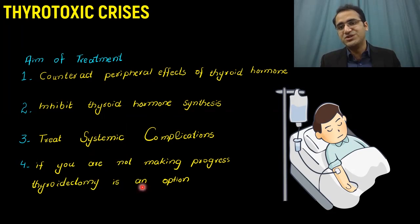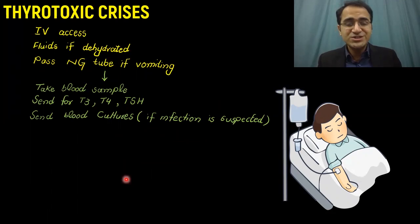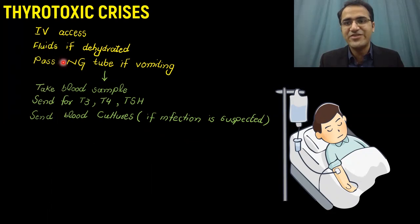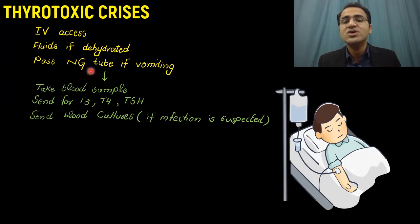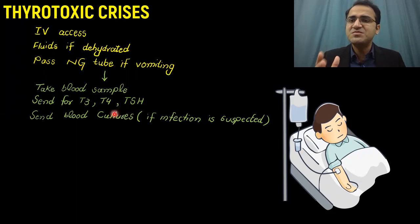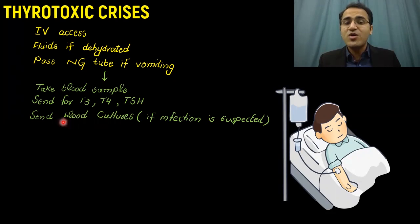If a patient presents to you in the emergency department with thyrotoxic crisis, the first thing you need to do is maintain IV access and start fluids if the patient is dehydrated. If the patient is vomiting and cannot take feed, pass an NG tube. While establishing IV access, take blood samples and send them for T3, T4, and TSH levels. You can continue treatment even before results are back if the patient is in severe condition. Send blood cultures if you suspect infection has caused release of thyroid hormones.